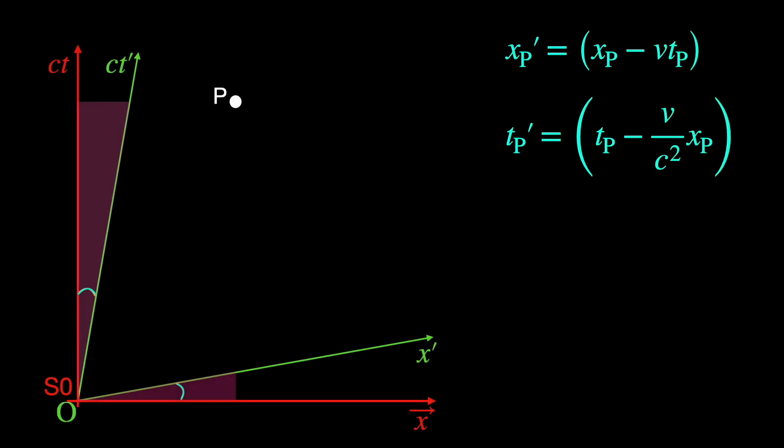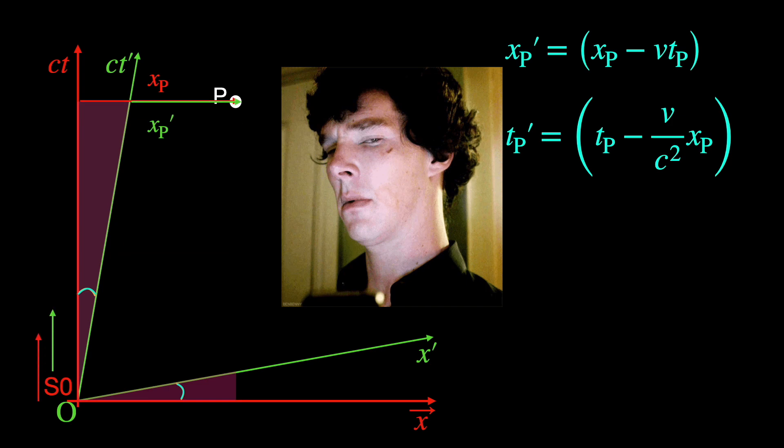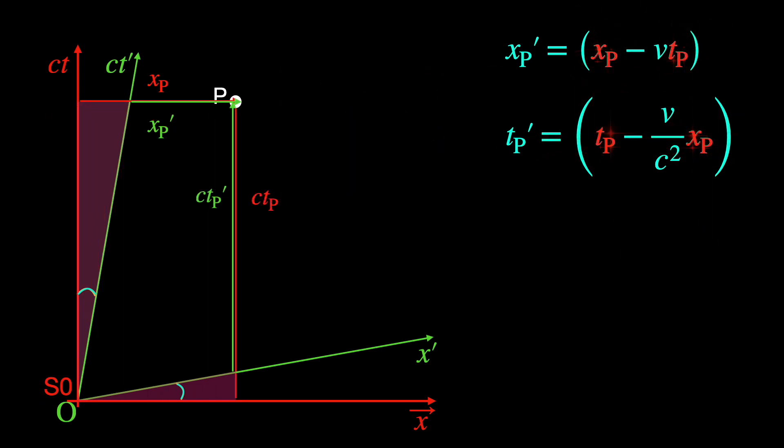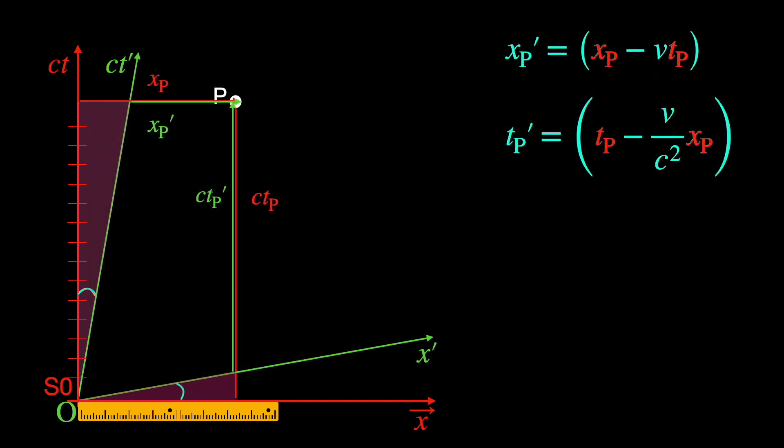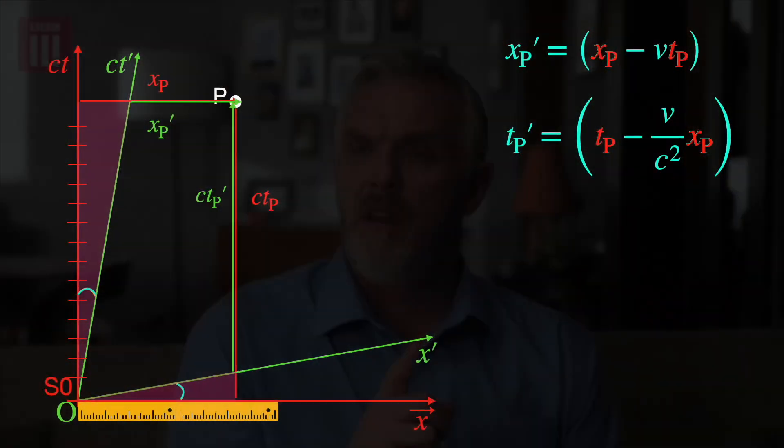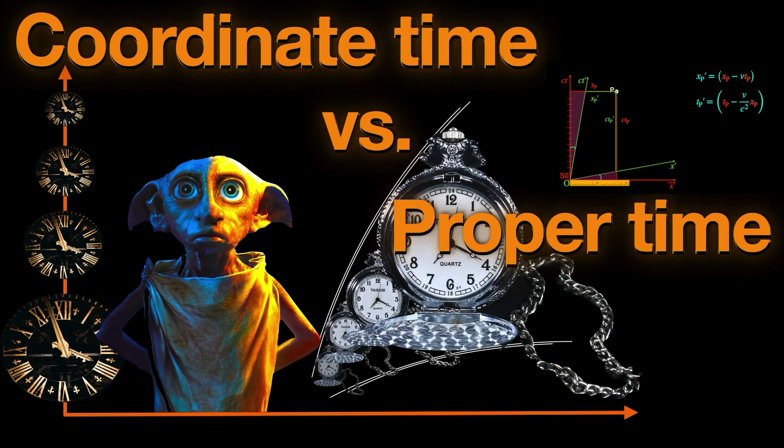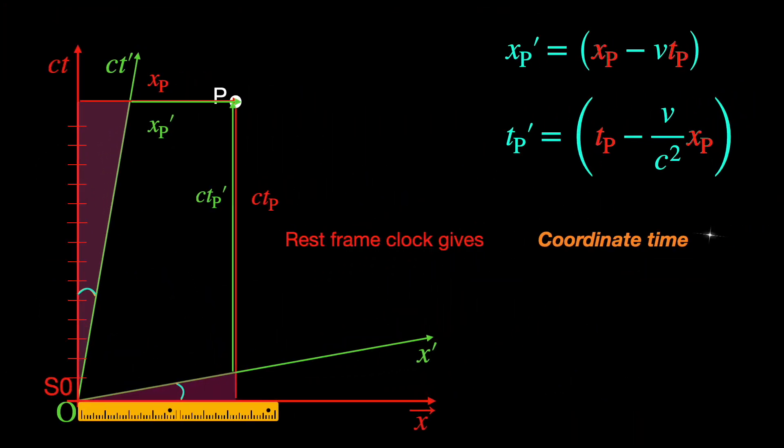But these expressions for x prime p and ct prime p are obtained geometrically by measurements made along the space and time axis of the rest frame S0 in terms of the S0 frame variables. Hence, the scales or units of length and time used in them are of S0 frame. But for them to represent spacetime coordinates of S1 frame correctly, we need them in units of S1 frame.